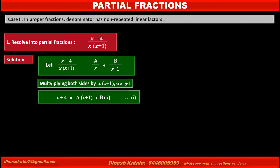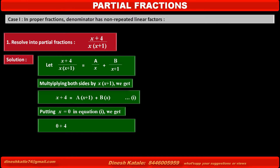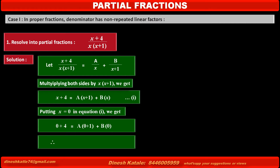Now we have to find the values of A and B. To find the value of A, we first eliminate B by putting x = 0 in equation 1. The left-hand side becomes 0 + 4, and the right-hand side becomes A(0 + 1) + B(0).